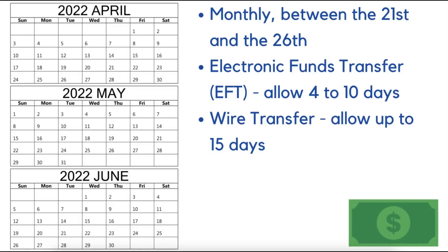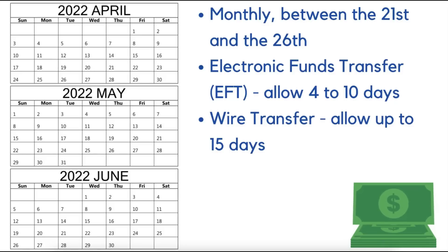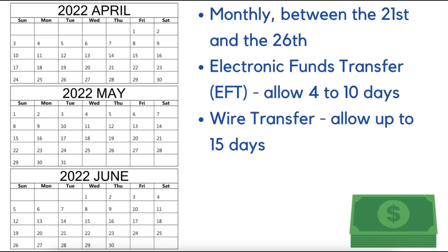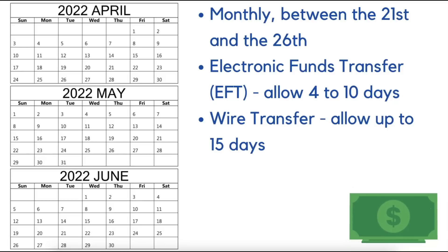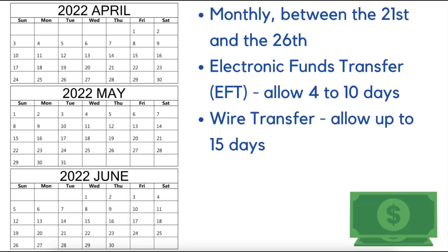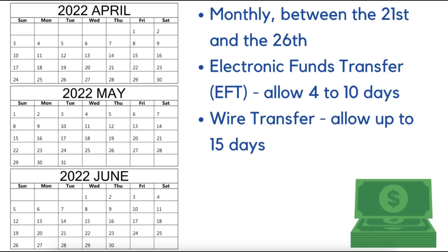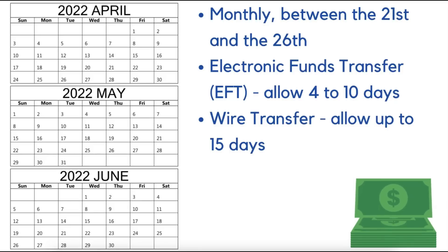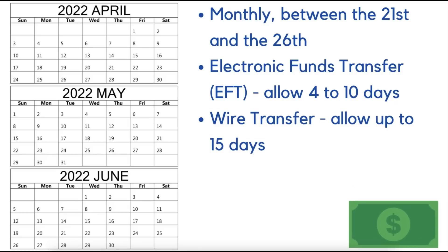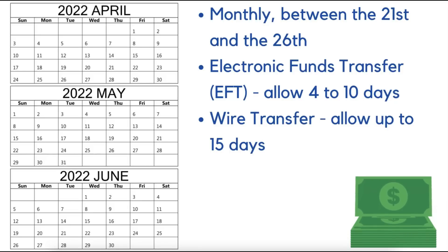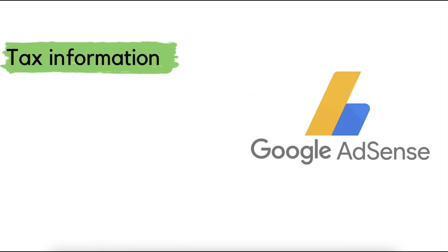If you use Electronic Funds Transfer or EFT, allow up to 4 to 10 days to receive funds in your bank account once the payment process has begun. For wire transfer, allow up to 15 days for the money to arrive in your account.